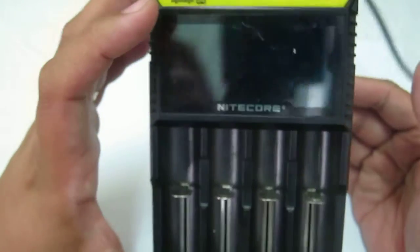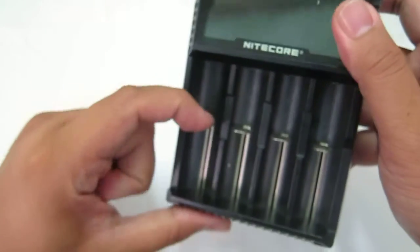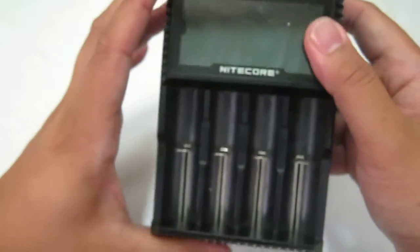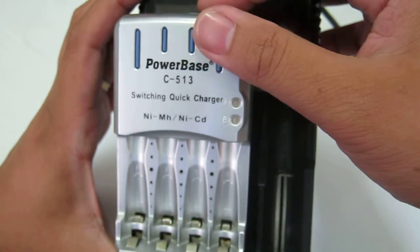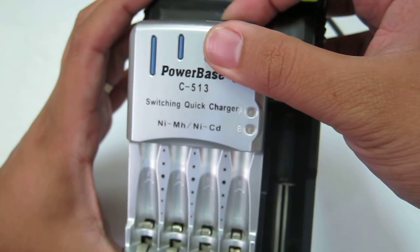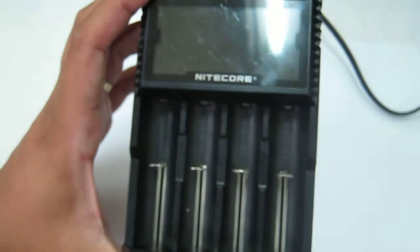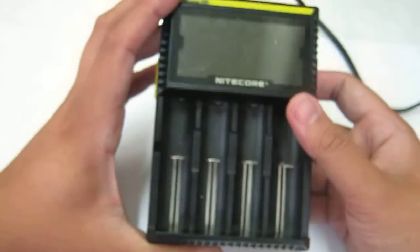So this charger has your screen here, you have your battery base. It's a bit oversized compared to the PowerBase because 18650 batteries are not the same size as triple A's and double A's.